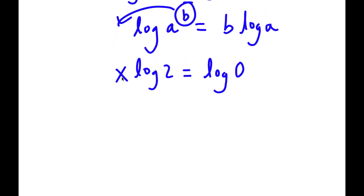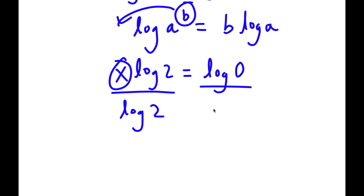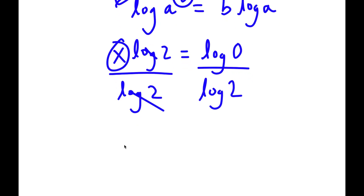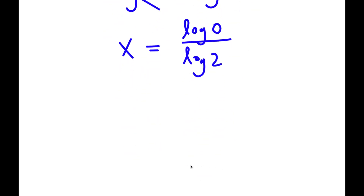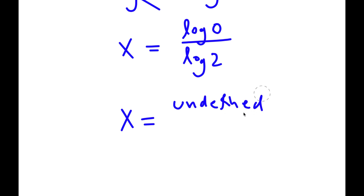So it's going to equal x times log 2, which is equal to log 0. I obviously want to isolate x here, so I'm going to divide both sides by log 2. These two cancel out, and now I have x is equal to log 0 over log 2. Now, log 0 is actually undefined, and log 2 is 0.301.